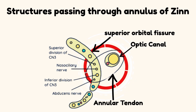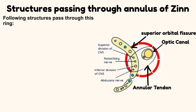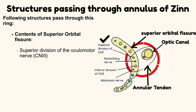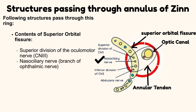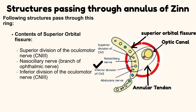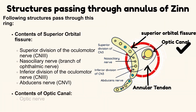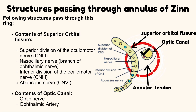Structures passing through the Annulus of Zinn. The following structures pass through this ring. From the superior orbital fissure: the superior division of the oculomotor nerve, the nasociliary nerve, the inferior division of the oculomotor nerve, and the abducens nerve. From the optic canal: the optic nerve and the ophthalmic artery.